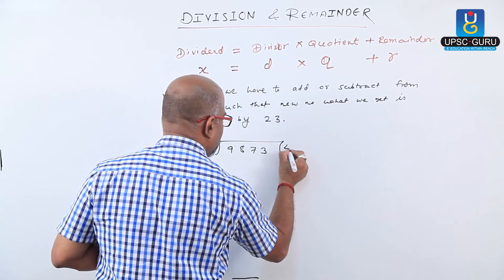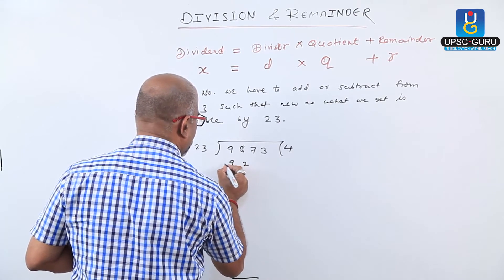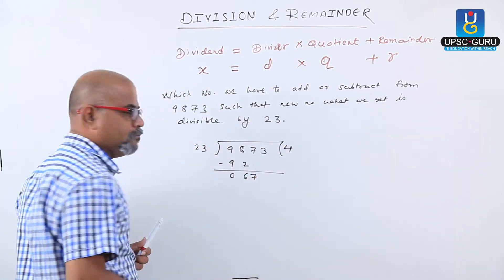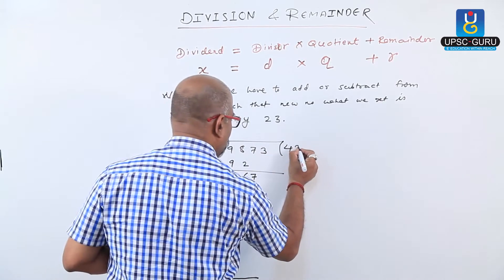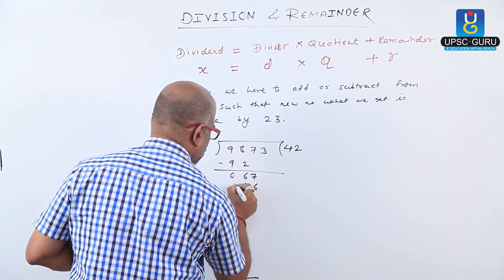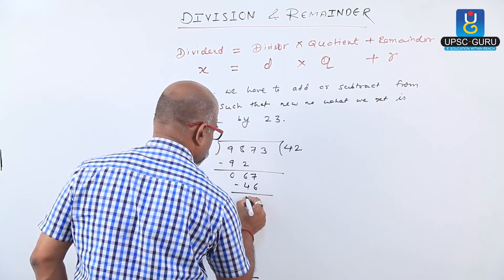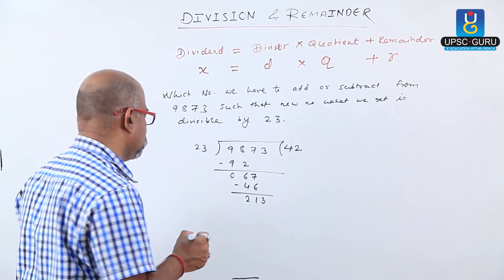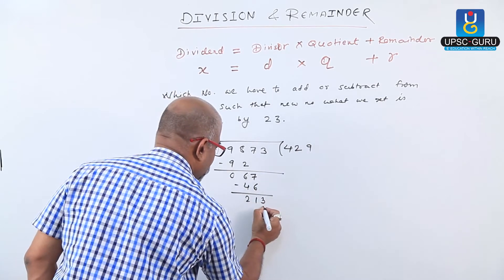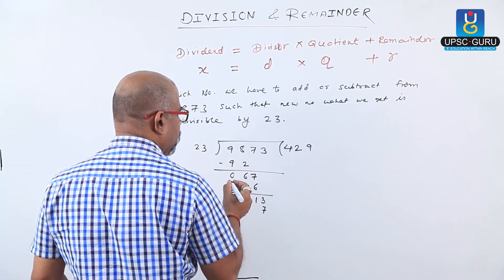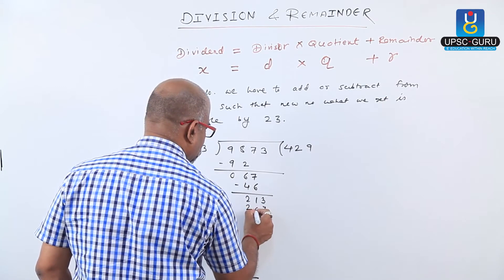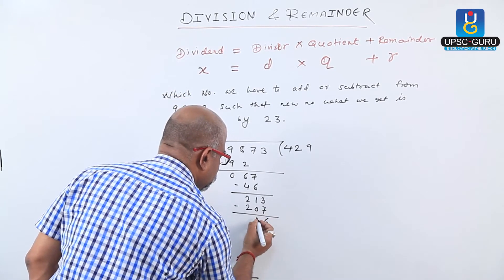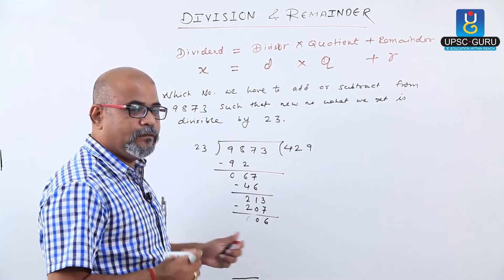Performing the division: 23 times 4 is 92. Bring down the next digit to get 67; 23 times 2 is 46, giving 21. Bring down 3 to get 213; 23 times 9 is 207, giving remainder 6. So we get quotient 429 and remainder 6.